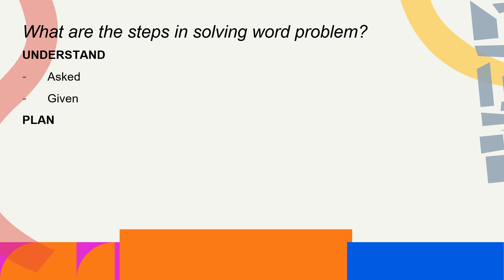After understanding the problem, we need to plan — we need to find what operation we are going to use. Then we need to solve. After finding the operation to be used, we will solve the problem by writing the number sentence and then the solution.